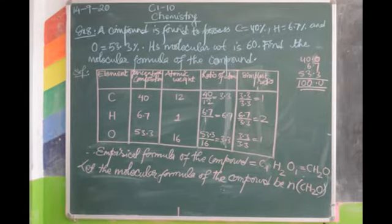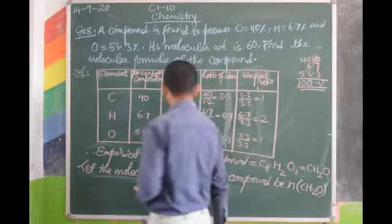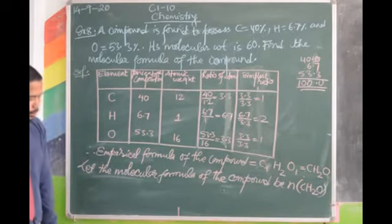Therefore the empirical formula is C1H2O1. Ignoring the 1s, we write CH2O. This is the empirical formula.